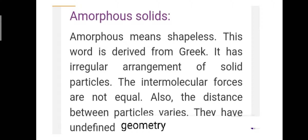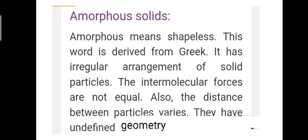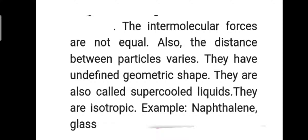In amorphous solids, the intermolecular forces are not equal, and the distance between particles varies. They have an undefined geometric shape. Amorphous solids are also called supercooled liquids, and they are isotropic. Examples include naphthalene, glass, and others.